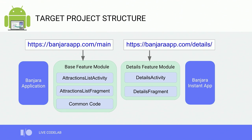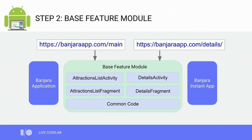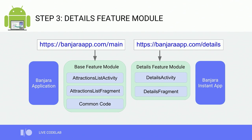The first thing to consider is what are the URL entry points into Banjara that make sense. We have two entry points — one for the list and one for the details — and we want to make both discoverable. We'll add two URL entry points and refactor the existing application code into two feature modules. The base feature module would contain the attractions list and common code, and the details feature module would have the details experience. We'll reach our target project structure in three steps: step one, introduce URL entry points; step two, make the existing module a base feature module; step three, extract the details into its own module.